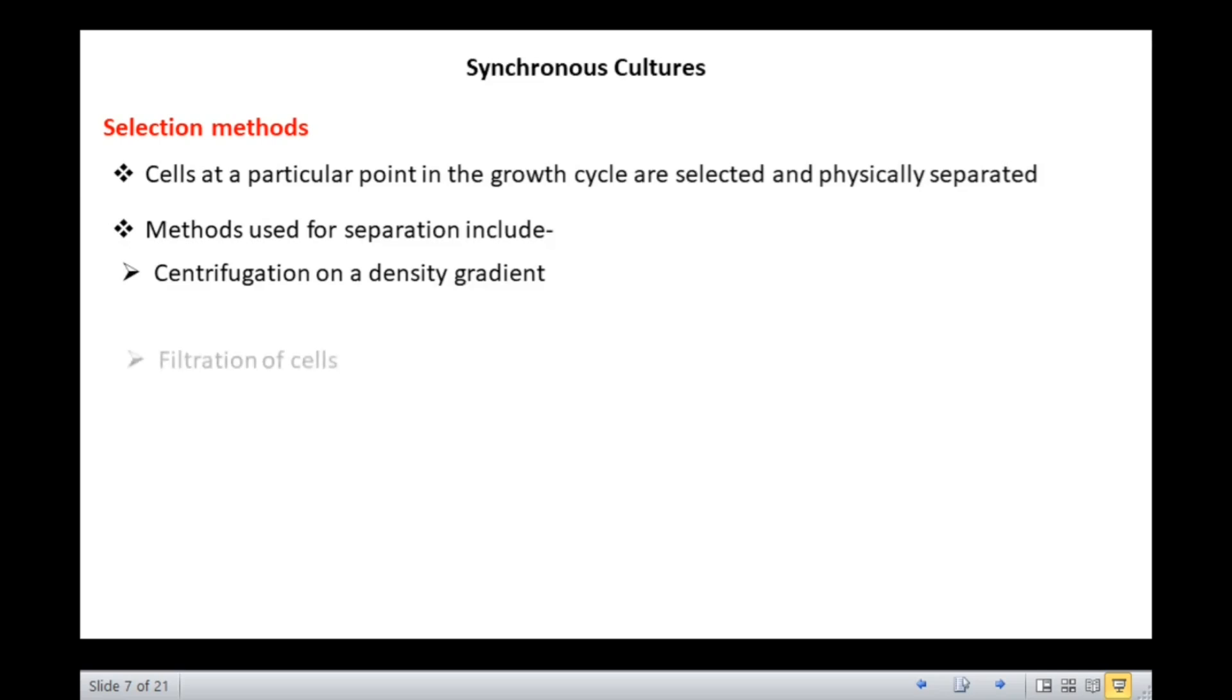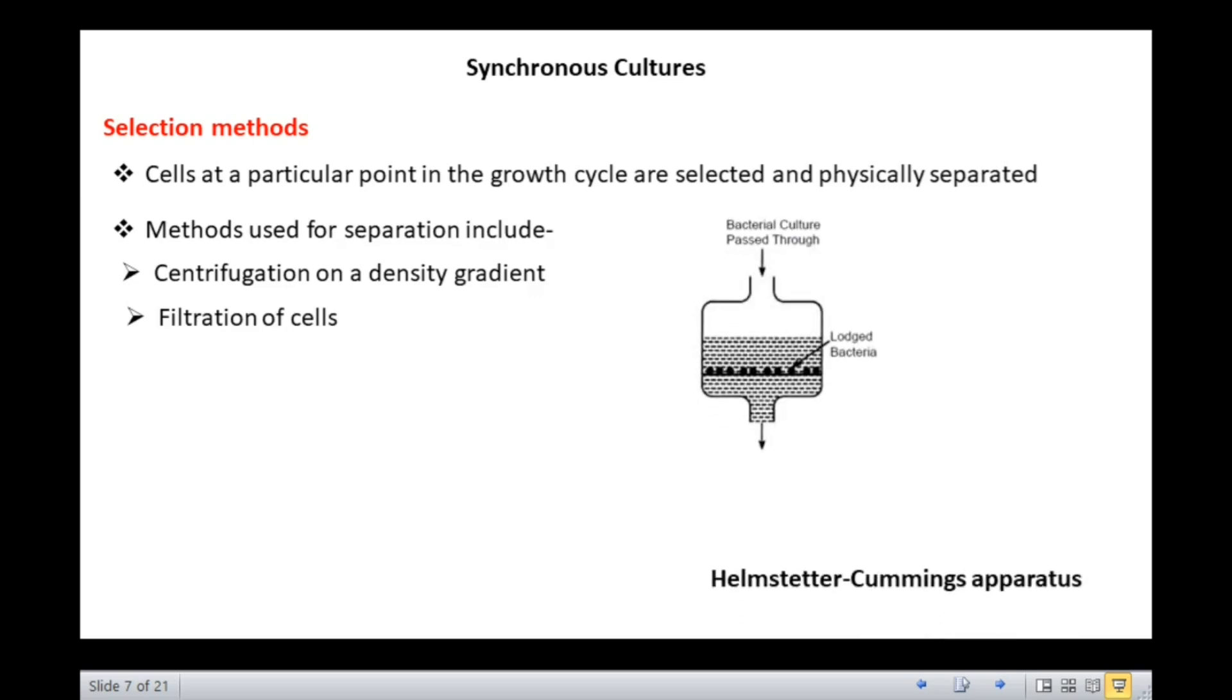Second, filtration of cells through a cellulose nitrate filter. The most widely used method for obtaining synchronous cultures is the Helmstetter-Cummings apparatus. As can be seen in the figure, it consists of a glass vessel with an inlet and an outlet and a membrane filter with a specific pore size. The pore size of the filter is selected in such a way that the smallest cells will pass off through the filter.